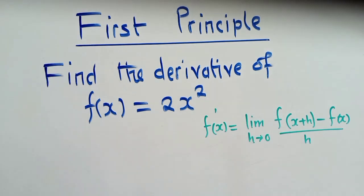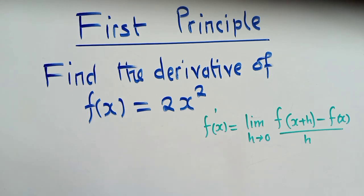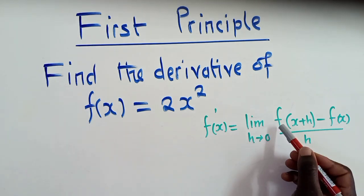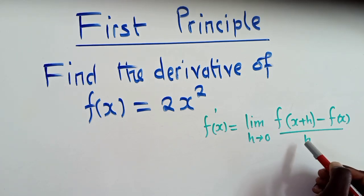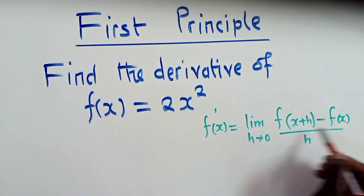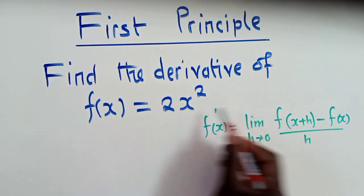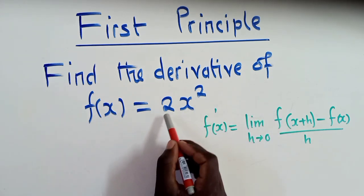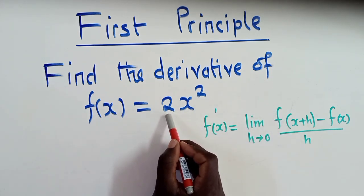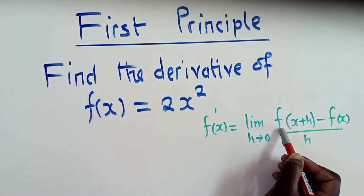So this is a formula that you must keep into consideration. Upon identifying the formula, the next thing must be to identify what is it that we're supposed to put where f is. So where f is, we move back to the given function. The number that is in front, the coefficient, is what we're going to put where f is.